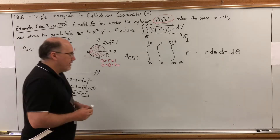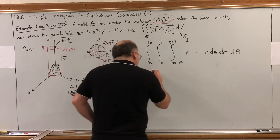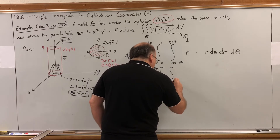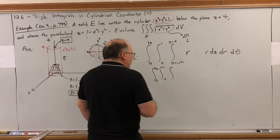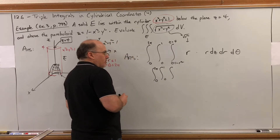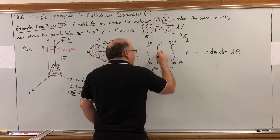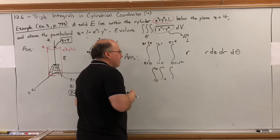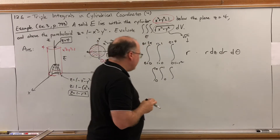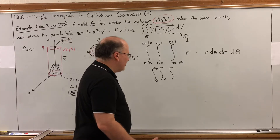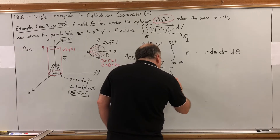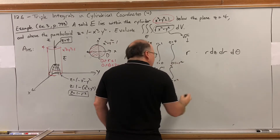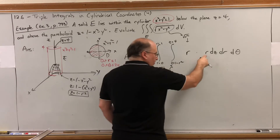The full integral is now three calculus-one integrals in a row: integral from 0 to 2π, integral from 0 to 1, integral from 1 − r² to 4, of r² dz dr dθ. It's important to label the variables on the limits of integration clearly so you know which variable each limit substitutes for when evaluating.